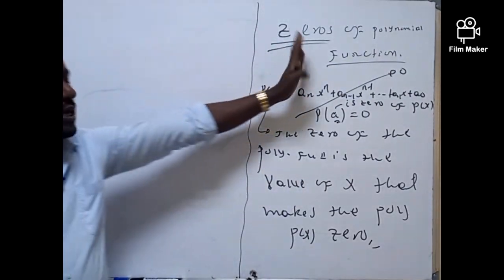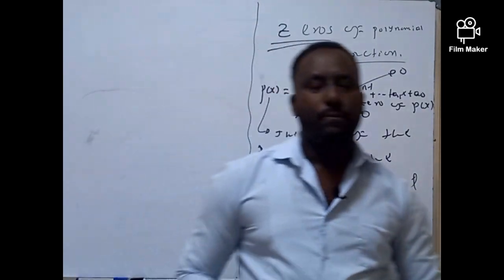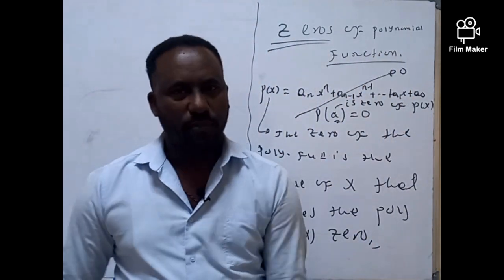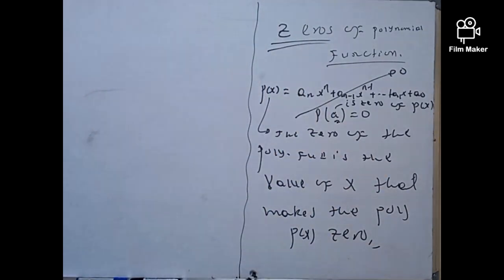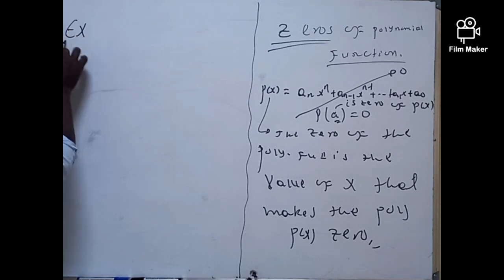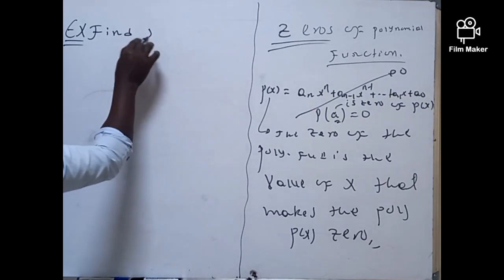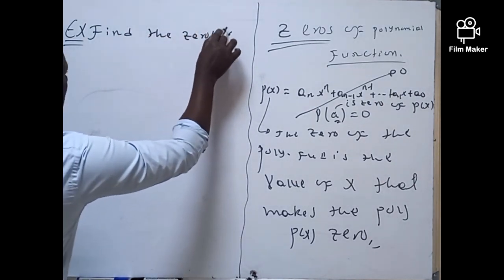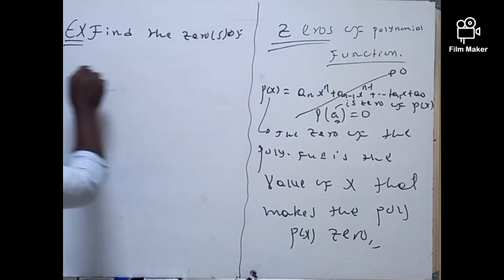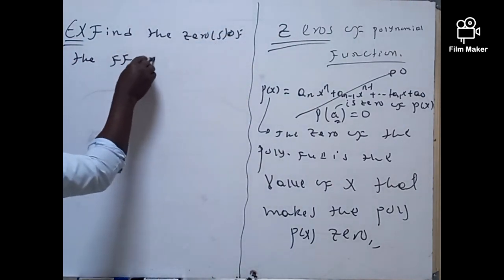First and foremost, you have to know what the zero of the polynomial is. We're also going to see what zeros and their multiplicity mean. We're going to see that more. Let me show you how to find the zero of the following functions. Find the zeros of the following polynomials.